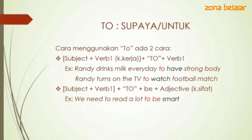Cara yang kedua: subject diikuti verb one, kemudian ada 'to be' — harus ada 'be' di situ karena setelahnya bukan kata kerja melainkan adjektif (kata sifat). Contoh: we need to read a lot to be smart. 'We' subject, 'need to read' kata kerja, 'lot' keterangan, 'to be smart' — smart adalah adjektif yang berarti pintar. Jadi artinya kita butuh banyak membaca supaya pintar.